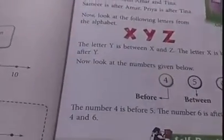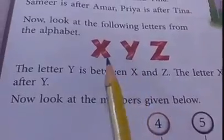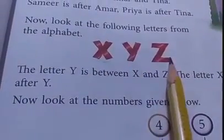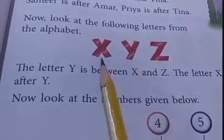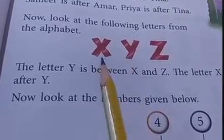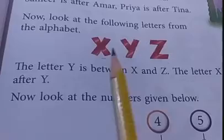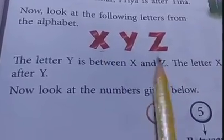And come to the exercise. Here one example also has given in your book also. X, Y and Z. So we can say Z comes after the Y. Or we can say X comes before the Y. And Y is between X and Z.